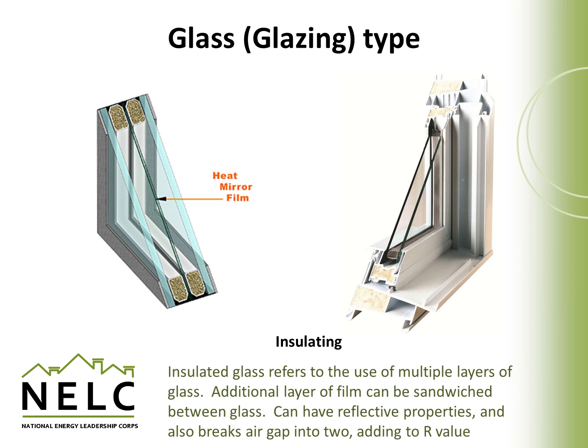Insulating glass refers basically to the use of multiple layers of glass. In some cases, an additional film of a different type of material was sandwiched in between the glass, which can have some reflective properties and also break the air gap into two, which can contribute to an added R value. Overall, the term insulating glass generally refers to a glass pane made of more than one layer of glass.